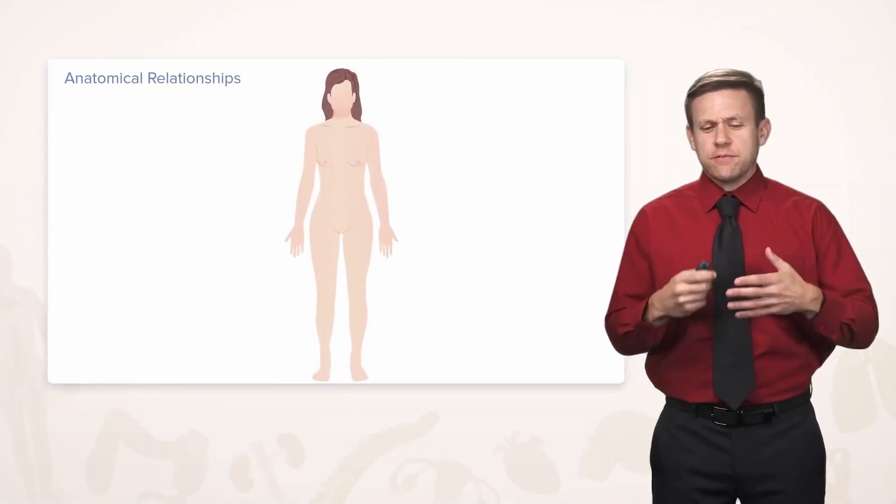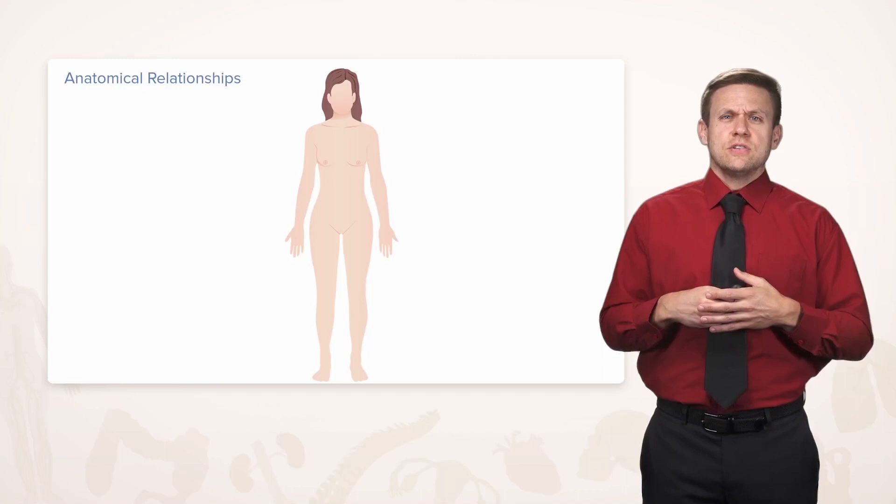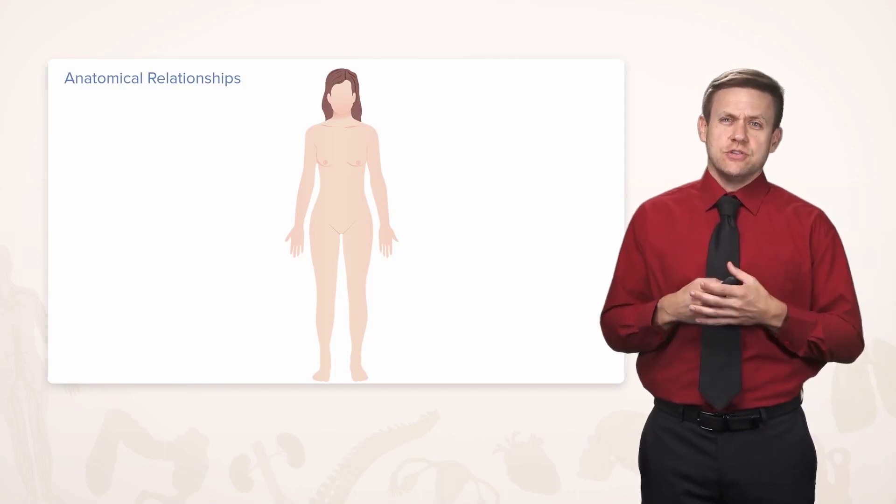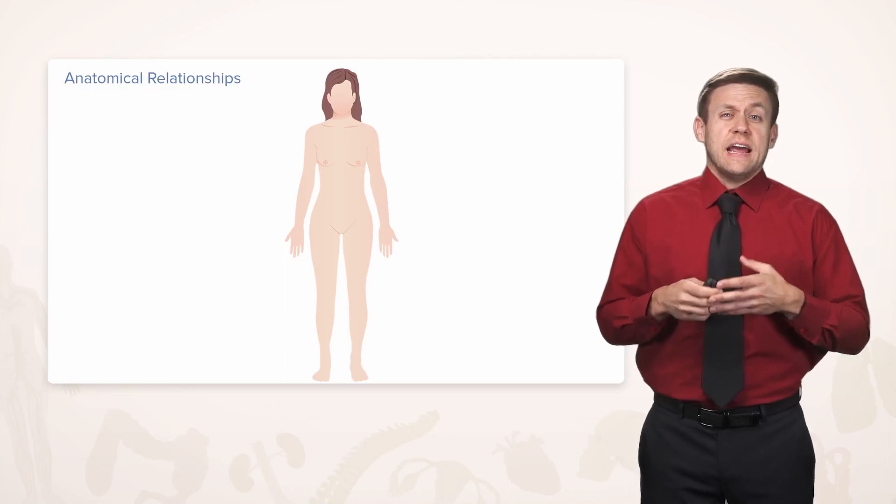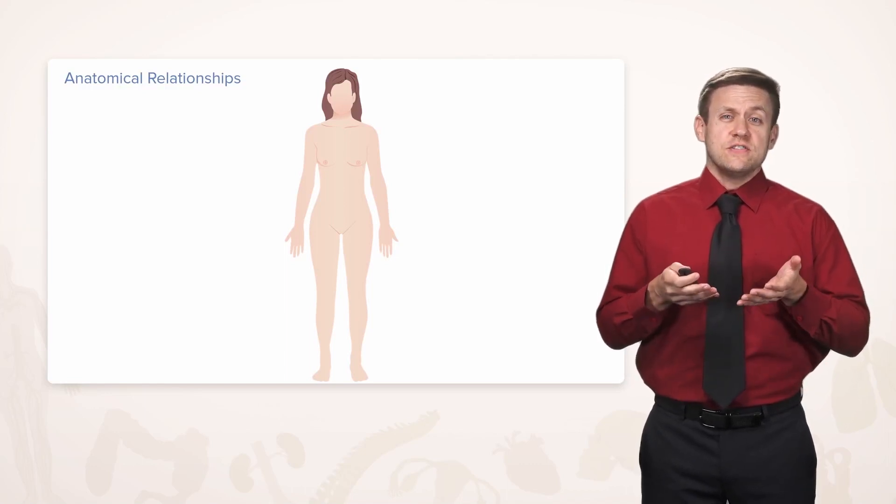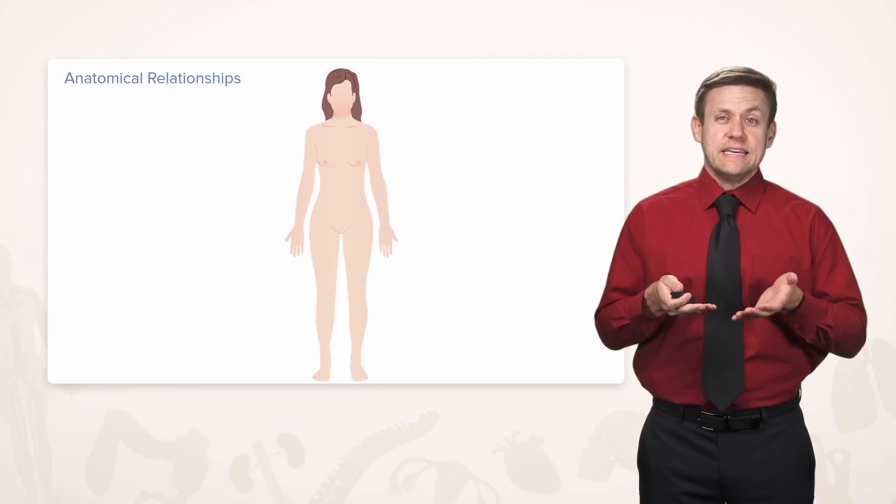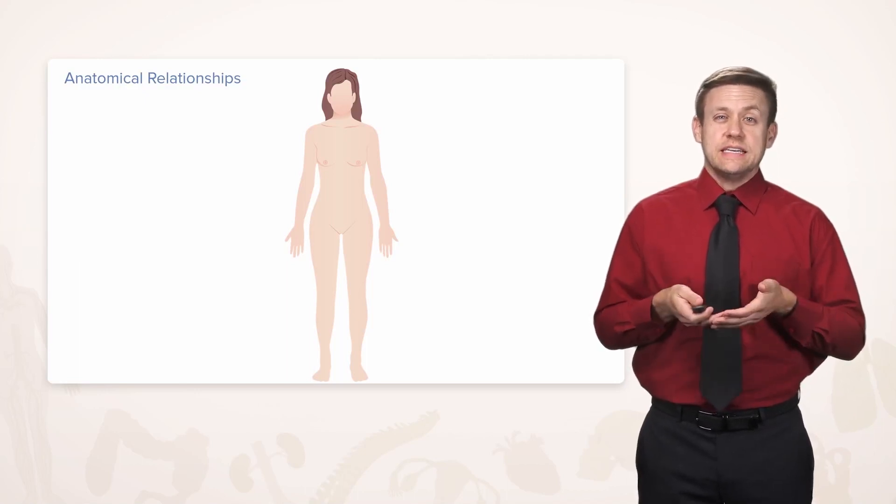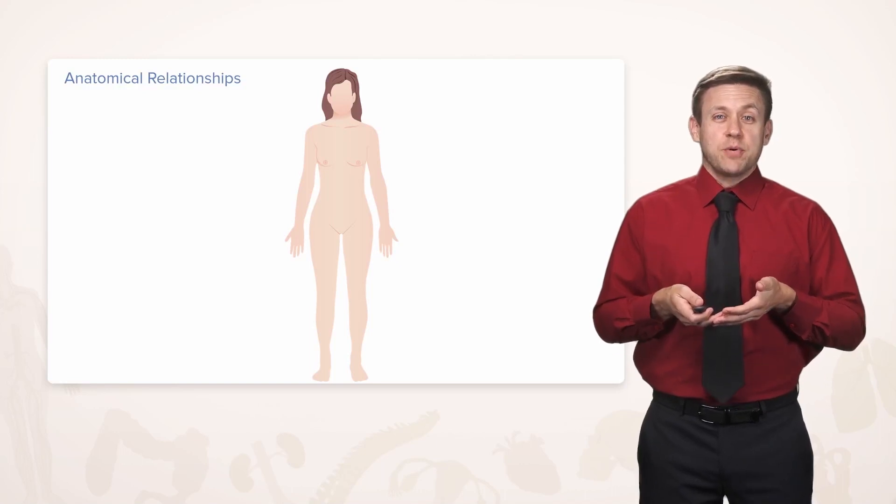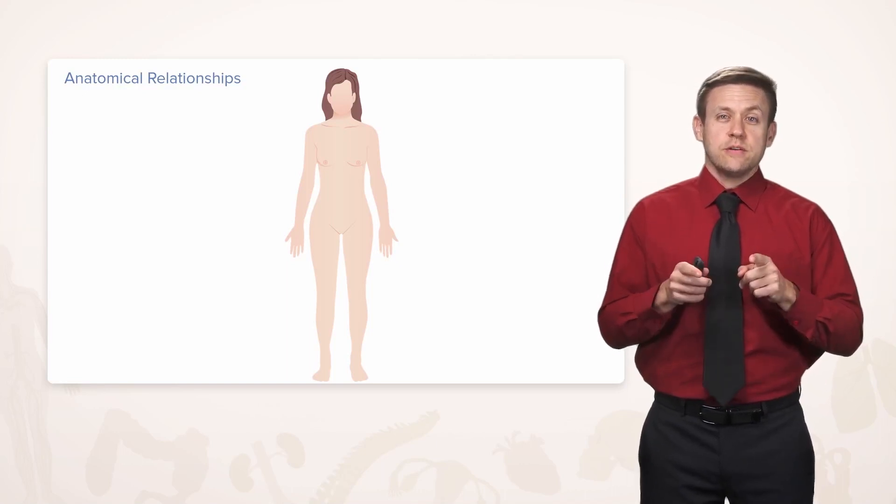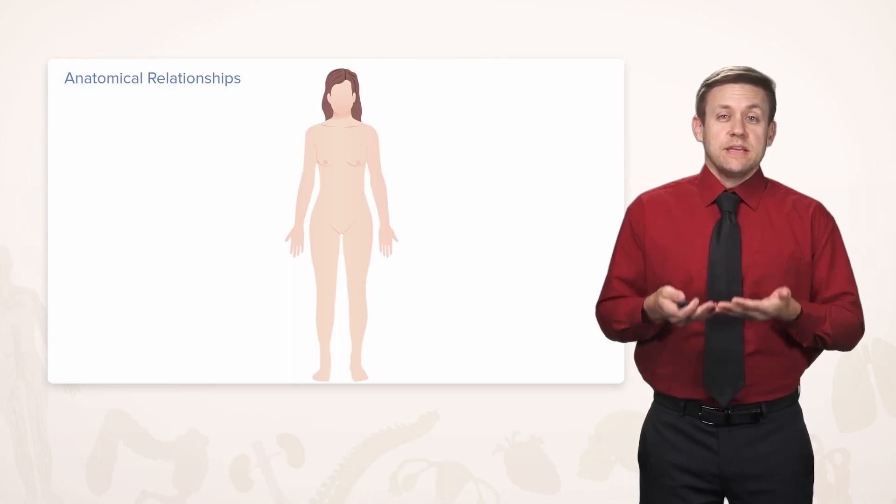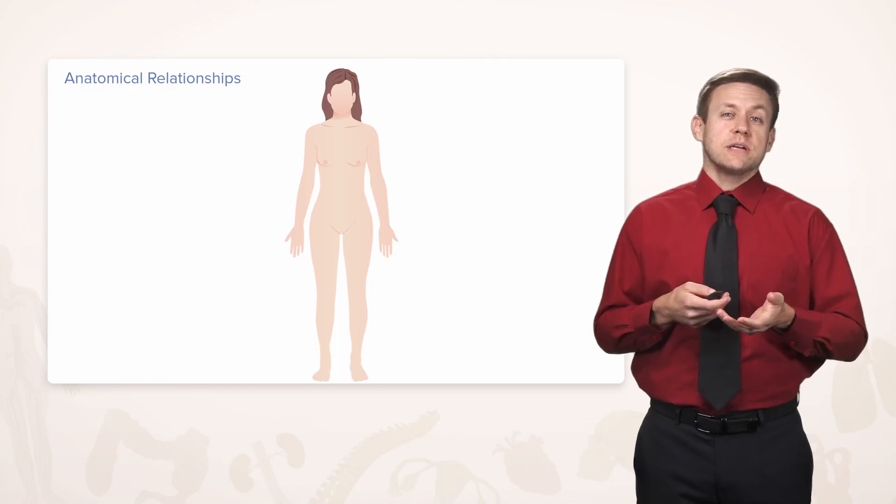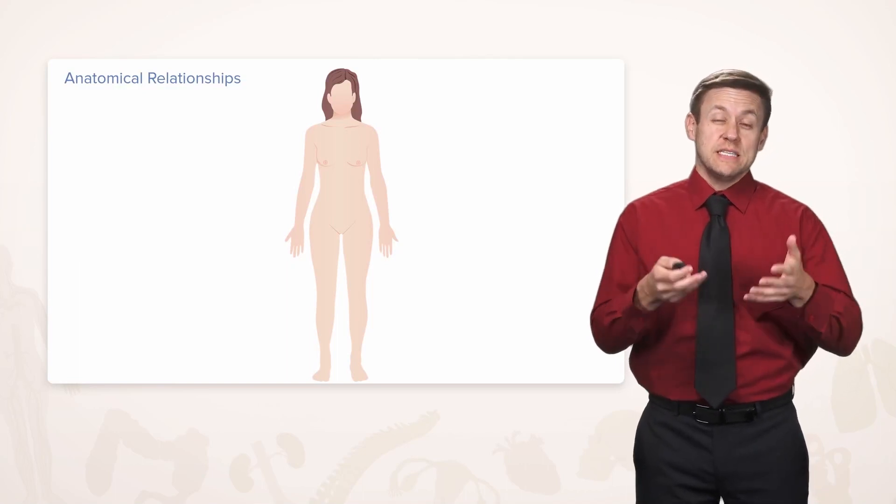But we don't really use terms like front and back and up and down, so we're going to talk about the terms we do use in anatomy that describe relationships of things. First, we're going to have to agree on what the standard position of the body is, and that's something called the anatomical position, as you can see here. It's standing upright with the toes pointing forward, and then the upper limbs at the side with the palms pointing forward. So these terms that we're going to talk about refer to this position.